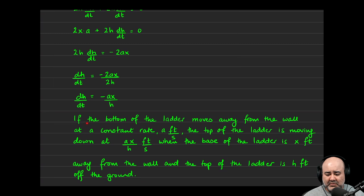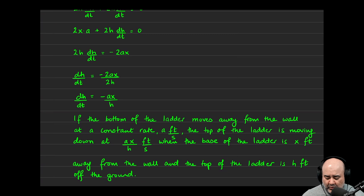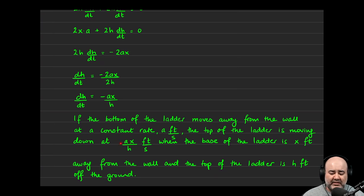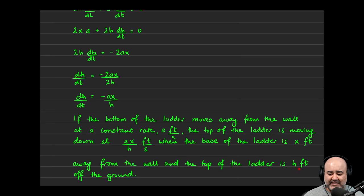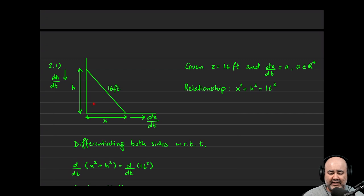What this means: if the bottom of the ladder moves away from the wall at a constant rate of a feet per second, the top of the ladder is moving down. The negative sign indicates moving down. The top moves down at ax/h feet per second when the base is x feet from the wall and the top is h feet off the ground. Do not include a negative sign in the rate when writing the interpretation — you'd lose points.